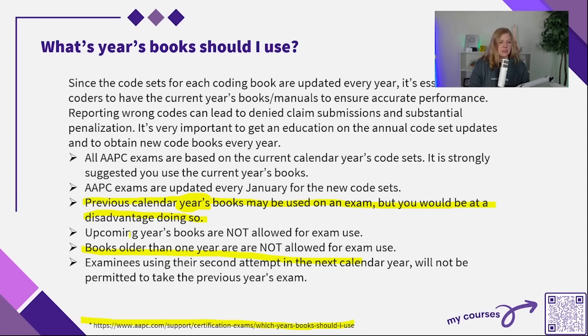Examinees using their second attempt in the next calendar year will not be permitted to take the previous year's exam. For example, if you take the exam in December 2024 and don't pass, then retake in January 2025, you can't take the 2024 version — you have to take the 2025 version.